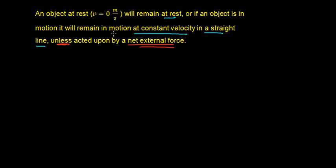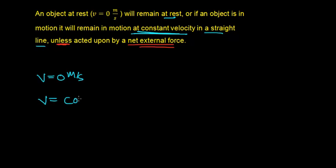So let's summarize some of the things stated within Newton's first law. It says that if the object is at rest, it will remain at rest. It also says that if an object is in motion, not only will it remain in motion, it will remain in motion at constant velocity in a straight line. So Newton's first law tells us two things: an object at rest — 0 meters per second — will remain at 0 meters per second. Or if it's moving, it's going to move at constant velocity, and not only at constant velocity, but constant velocity in a straight line.